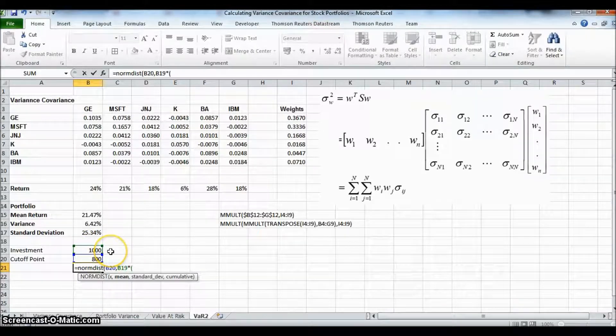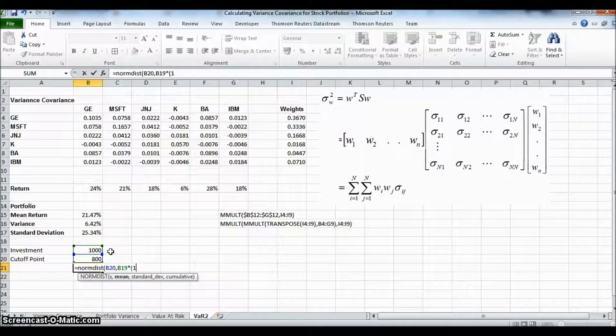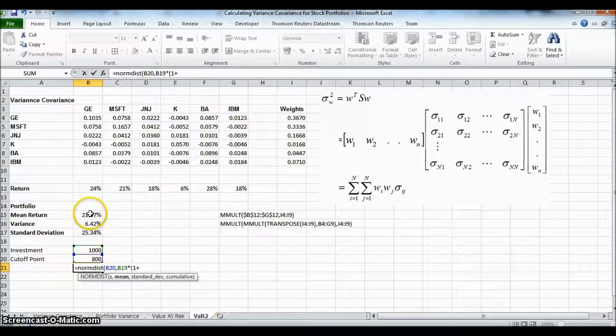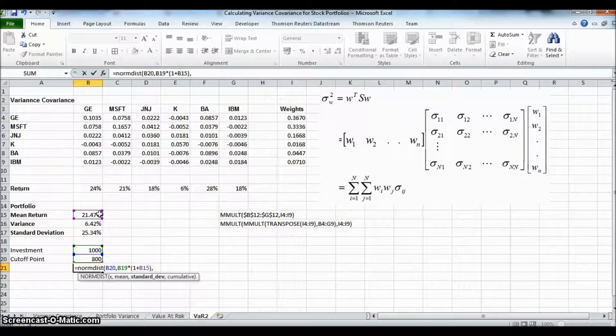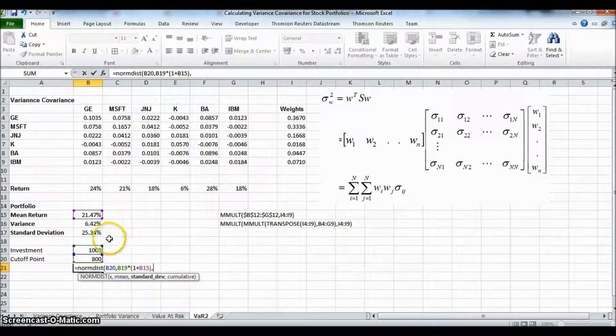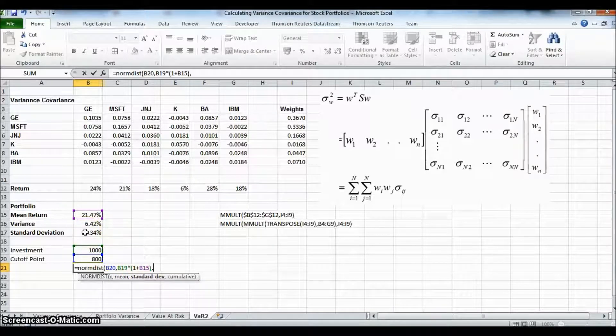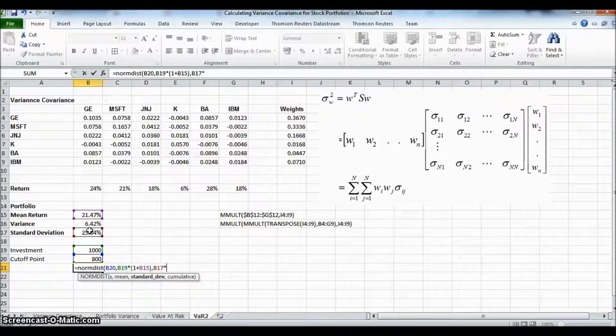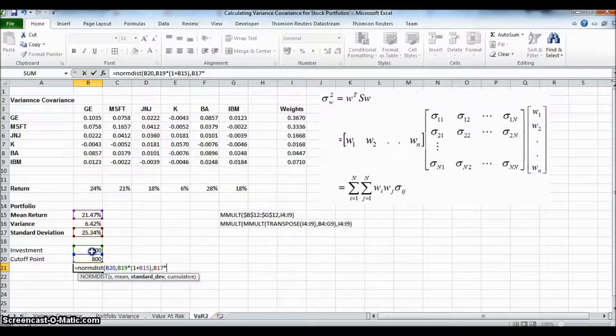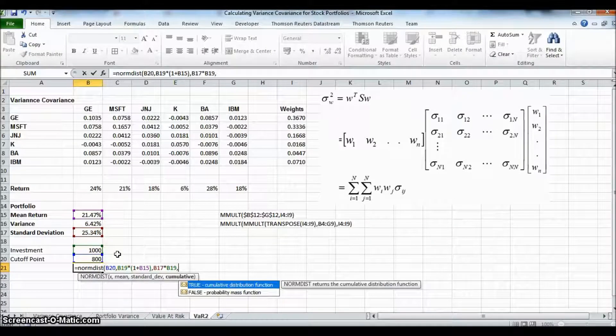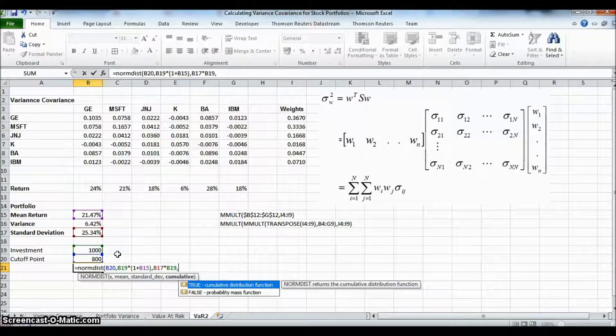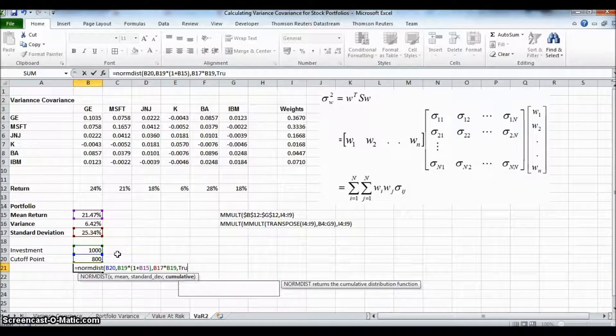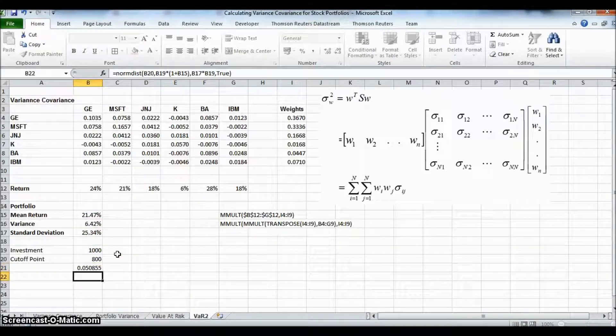And we expect it to grow by the mean rate of return. And we take into account the standard deviation. The standard deviation is 25%, also multiplied by 1,000. And we're looking for the cumulative probability. So we say true and return.